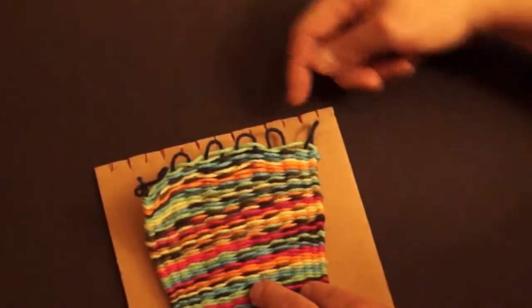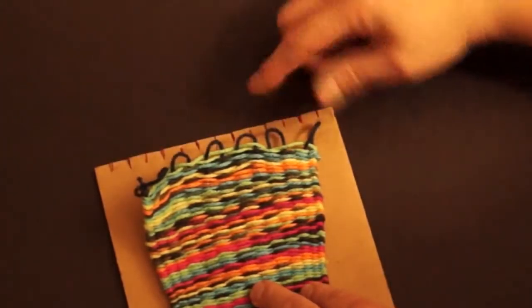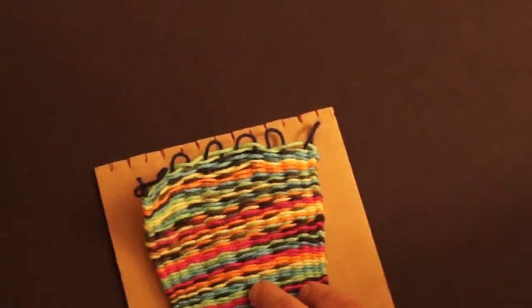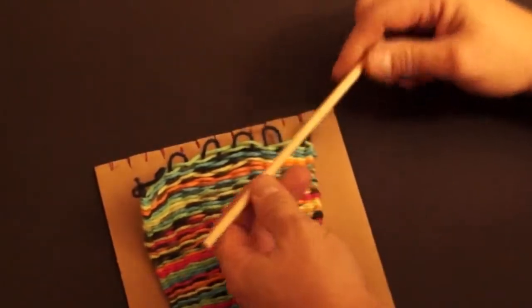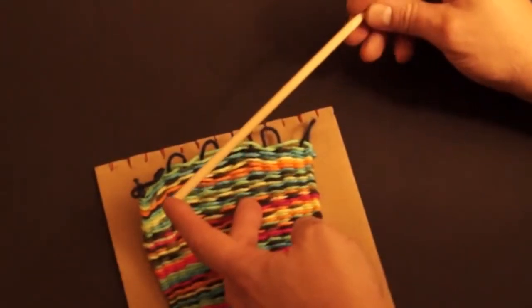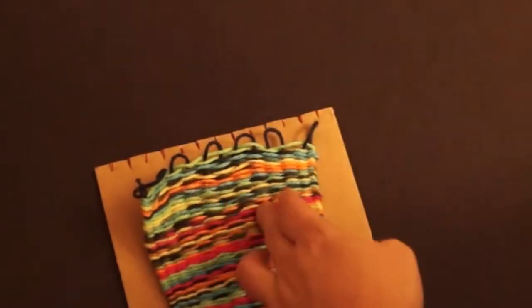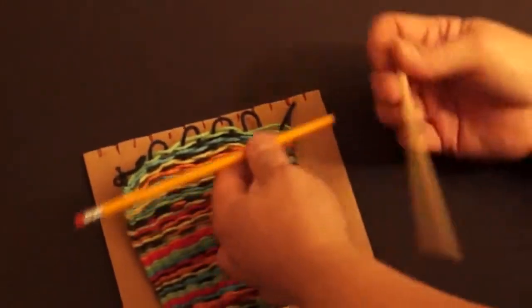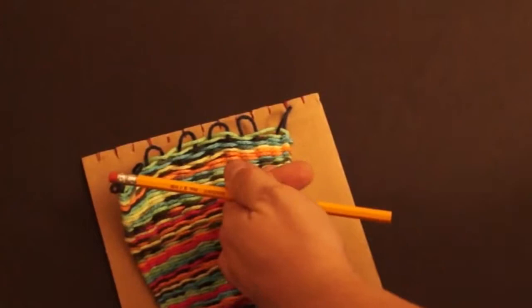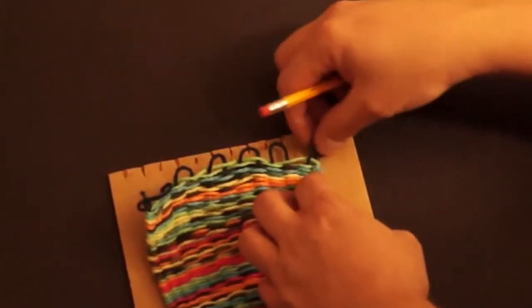Next what I'm going to do is fasten a rod through these loops on the end. You can use just a dowel rod. Or you could use a stick, a twig, a piece off a tree. You could also use a pencil. Maybe if you have a pencil that's not sharpened, that would work as well. In fact, let's start with the pencil and see what this looks like.